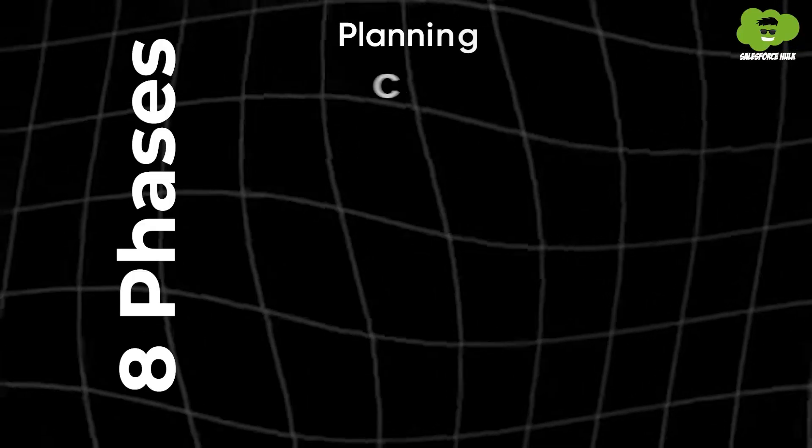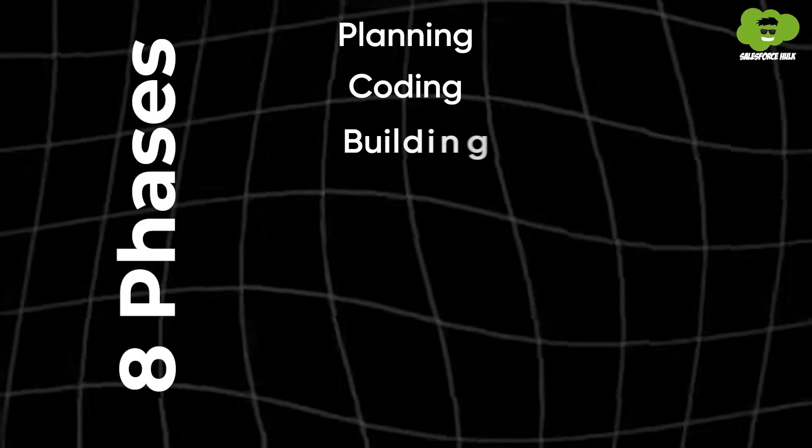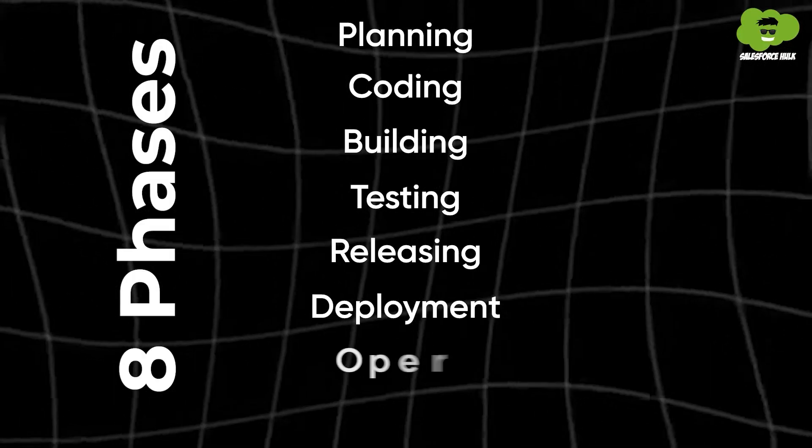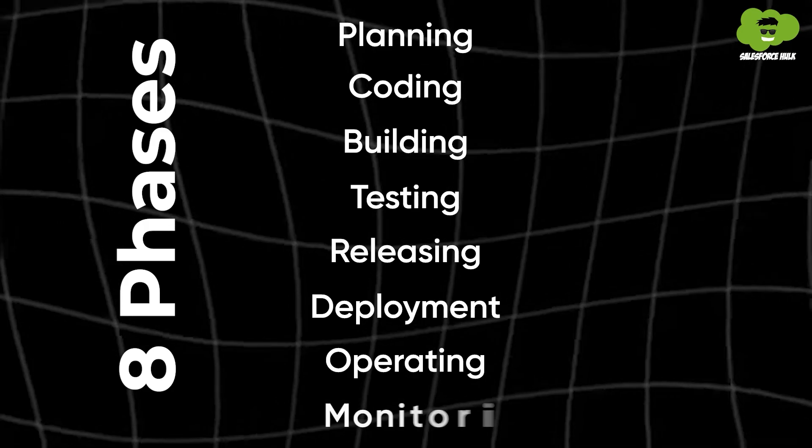Getting an understanding of DevOps is essential, but knowing its life cycle is equally crucial. The DevOps life cycle is visualized by an infinity symbol, which consists of eight phases. Let's go through the name of each phase one by one, and then I'll provide a brief overview.